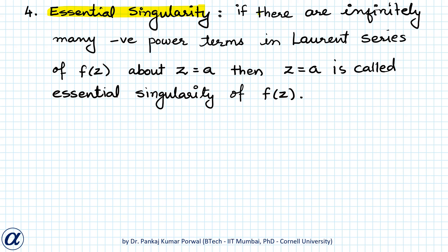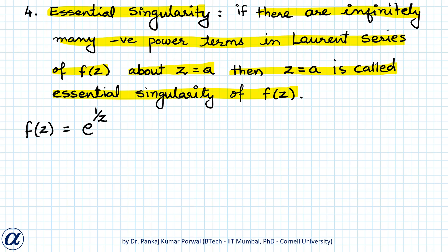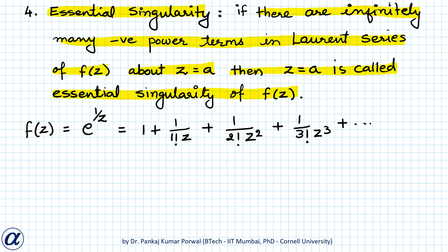The next type is essential singularity. If there are infinitely many negative power terms in the Laurent series expansion of f(z) about z equals a, then z equals a is called an essential singularity of f(z). For example, f(z) equals e to the power 1 upon z — the Laurent series expansion for this function shows that the negative power terms keep on adding to the series, so there are infinitely many negative power terms.